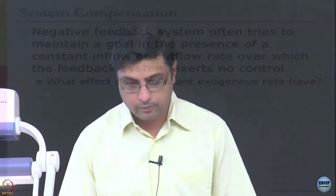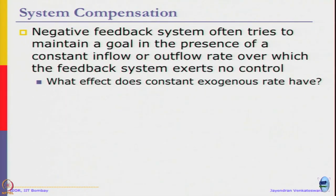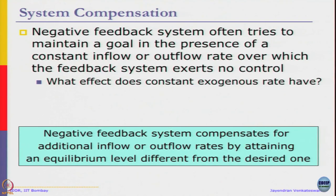Let us introduce the notion of system compensation. A negative feedback system often tries to maintain its goal in the presence of some exogenous factor — either a constant inflow or a constant outflow rate over which the feedback system exerts no control. In the presence of such an external variable, negative feedback systems will compensate by attaining an equilibrium that is different from the desired one.